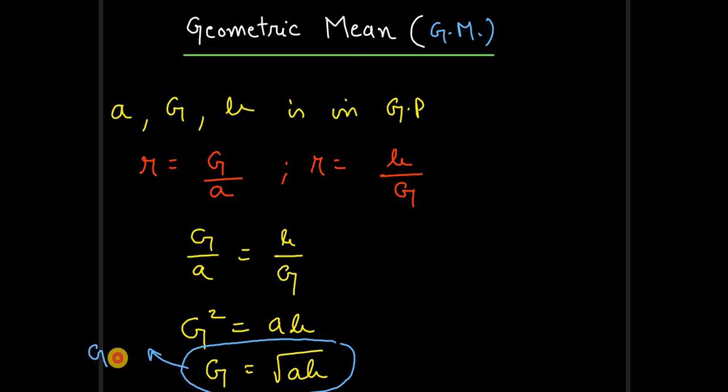Now what is G? G is the geometric mean of a and b. So in these three terms, G is the geometric mean of a and b. So let's take a very simple example. Let's say we have the sequence, let's say three.